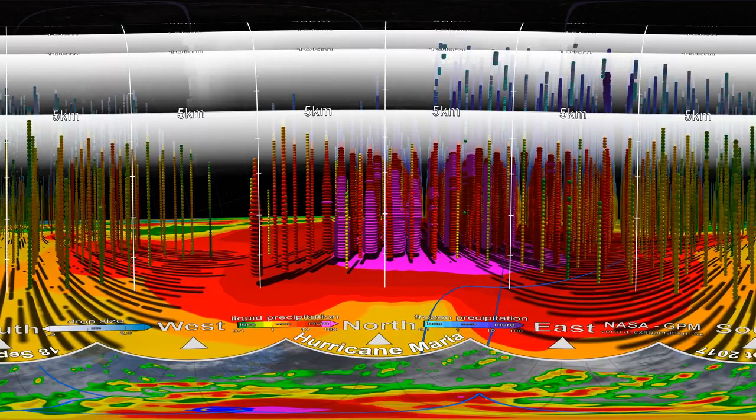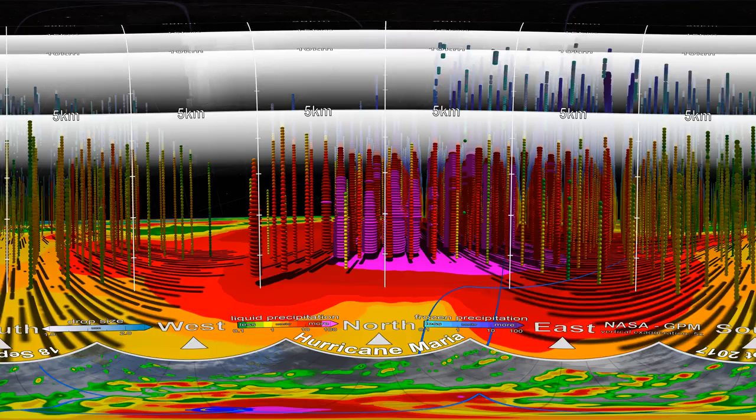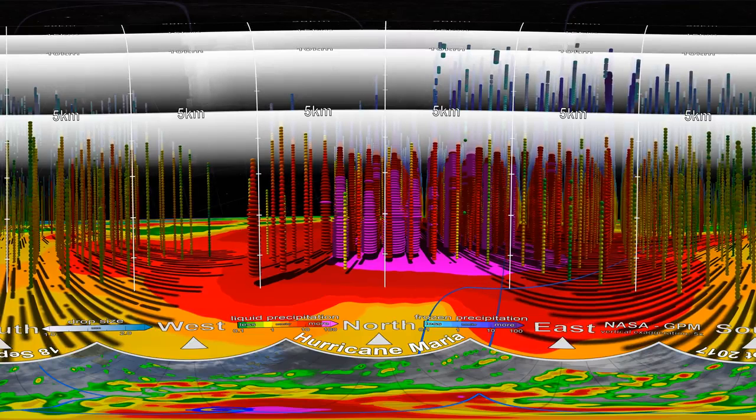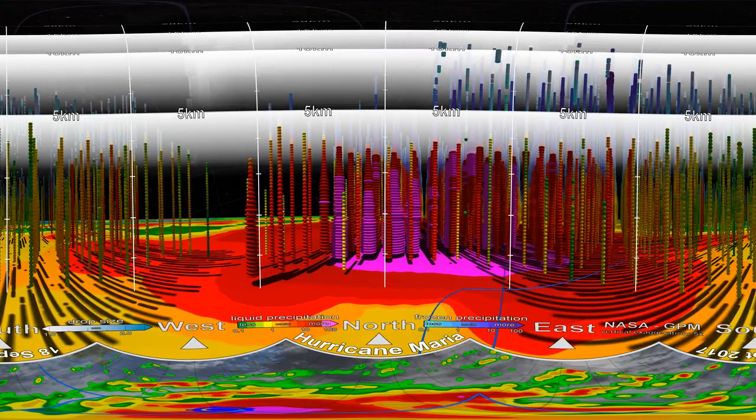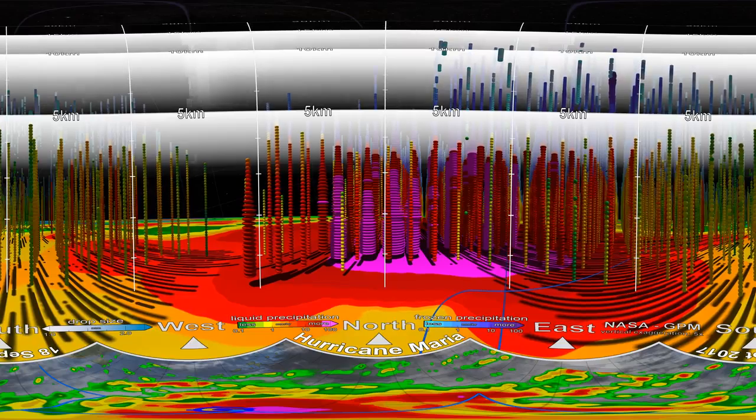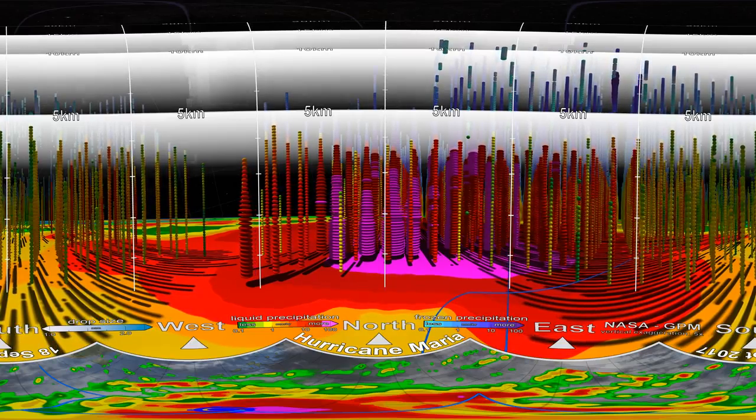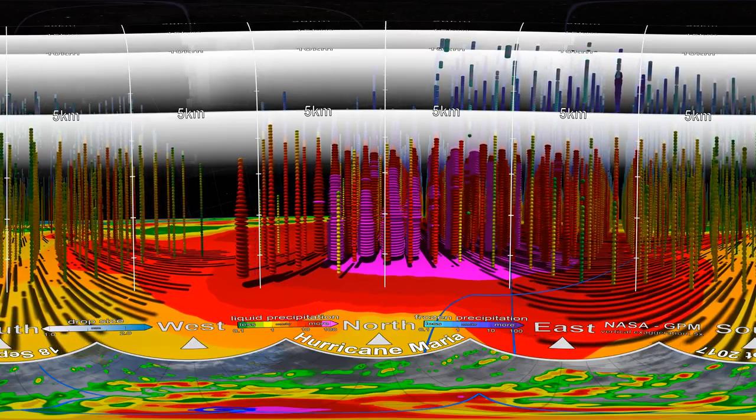We're now in the eye of Hurricane Maria. At this stage of development, Maria's eye wall is asymmetrical, with heavy rain in the northern part coloured in purple. This is common in storms impacted by environmental winds.